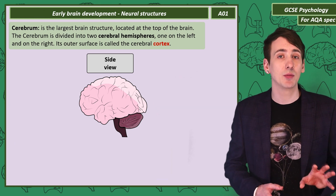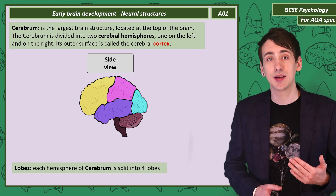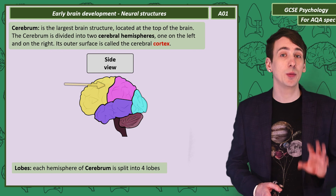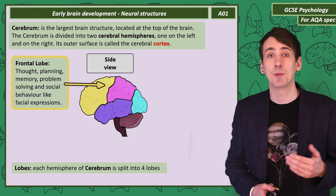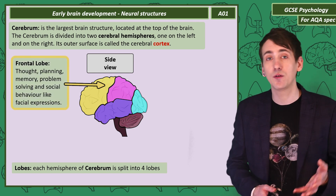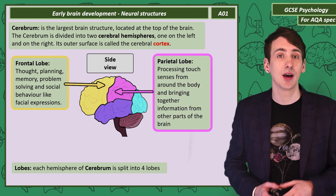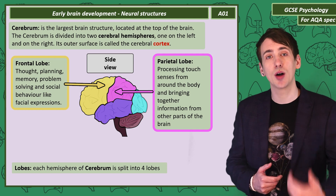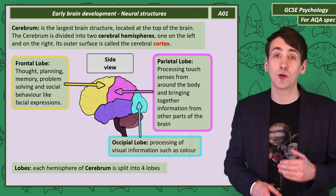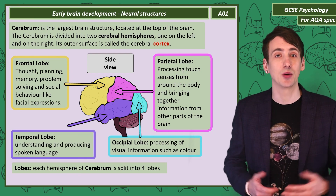Each cerebral hemisphere can be divided into four lobes, and we should be able to name them and understand their basic functions. The frontal lobe is responsible for thought and planning as well as social behaviour like facial expressions. The parietal lobe is used for touch sensors and bringing information from other parts of the brain together. The occipital lobe is for visual information, and the temporal lobe is for understanding spoken language.